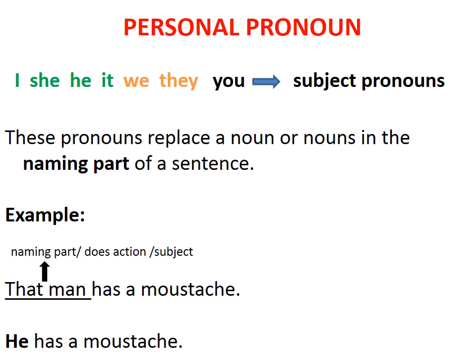To replace the subject, we use: 'He has a moustache.' Students, please note: I, she, he, it — these are the pronouns for singular nouns. We, they — these are used for plural nouns. And 'you' is used for both singular as well as plural, which will be explained later.